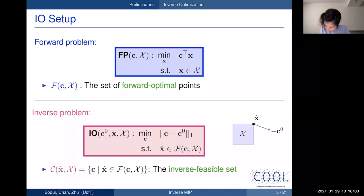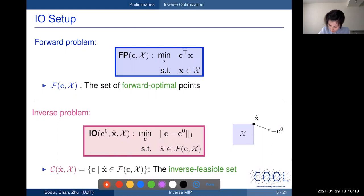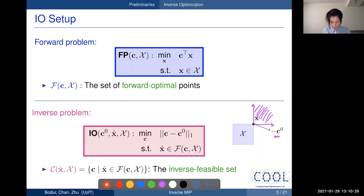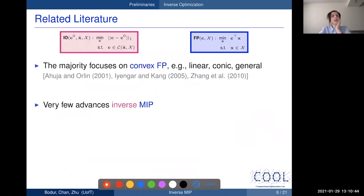We denote the feasible set of the inverse problem as the inverse feasible set — the set of all c vectors making x-hat a forward optimal solution. Here's a quick example: the forward feasible region is a blue box, x-hat is a given corner extreme point, and the inverse feasible set is a cone. Any c vector whose negative lies in this pink cone is inverse feasible, and we want the one closest to the reference point c-naught.